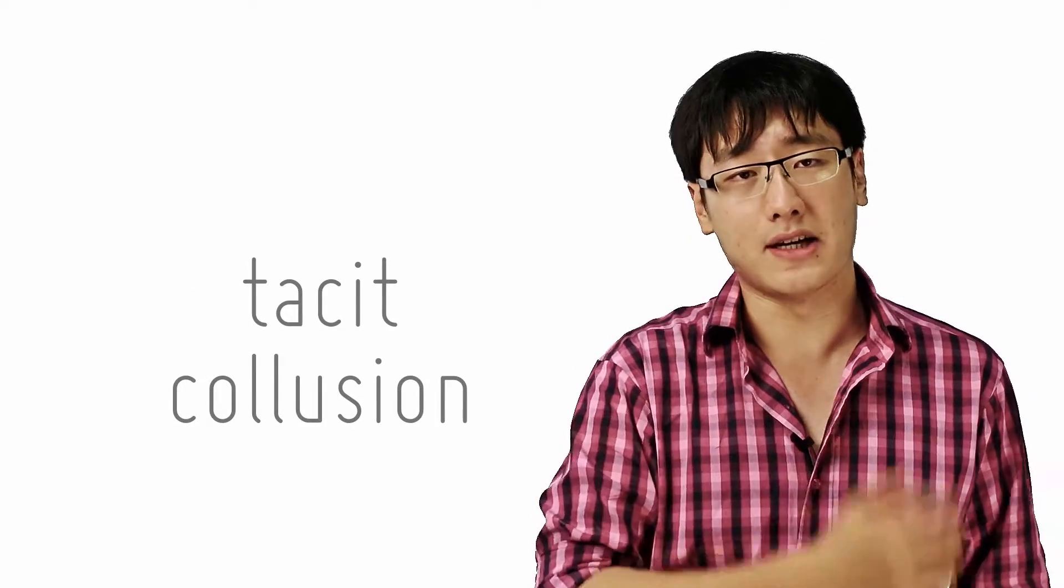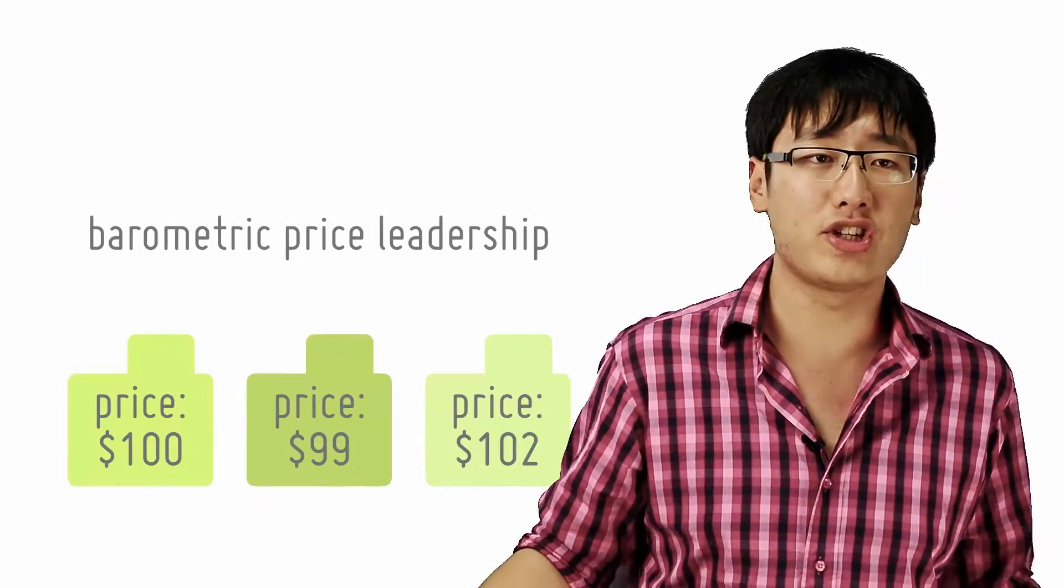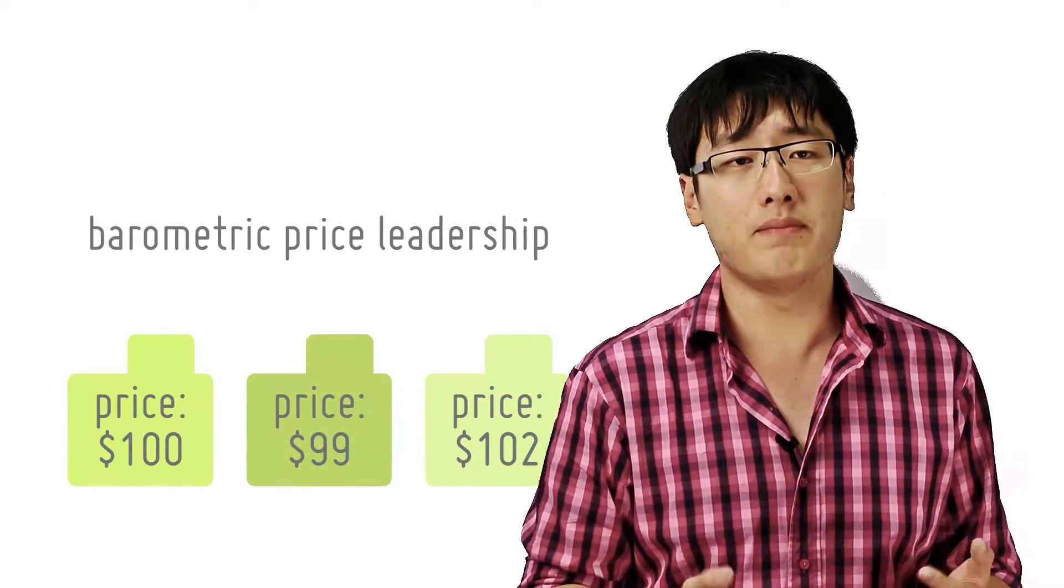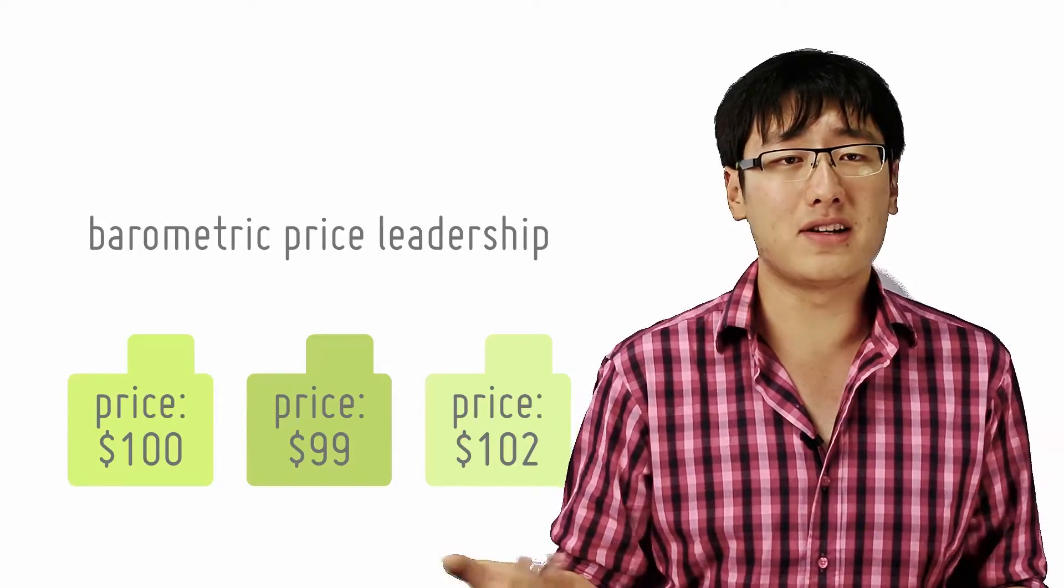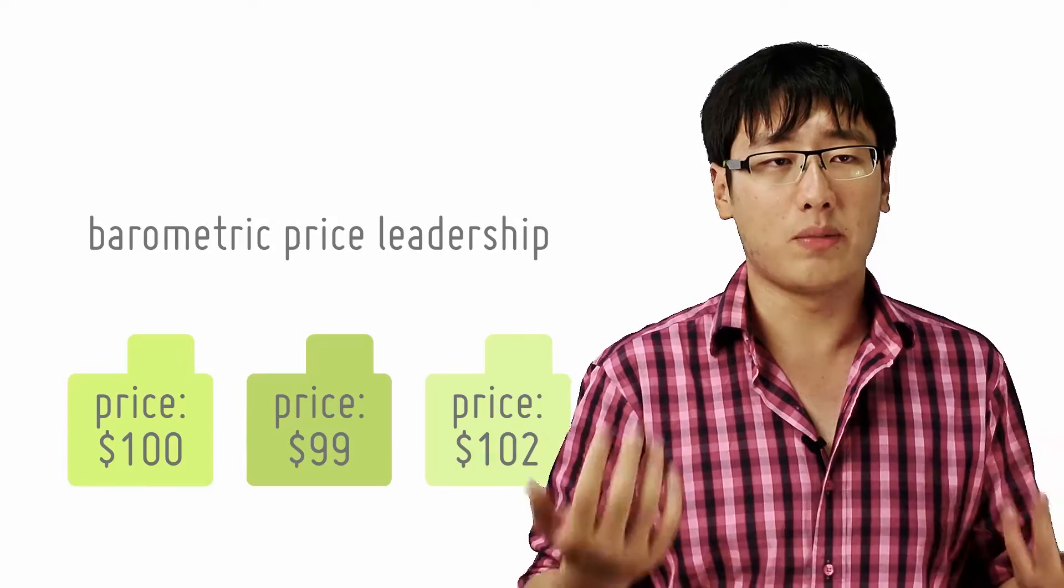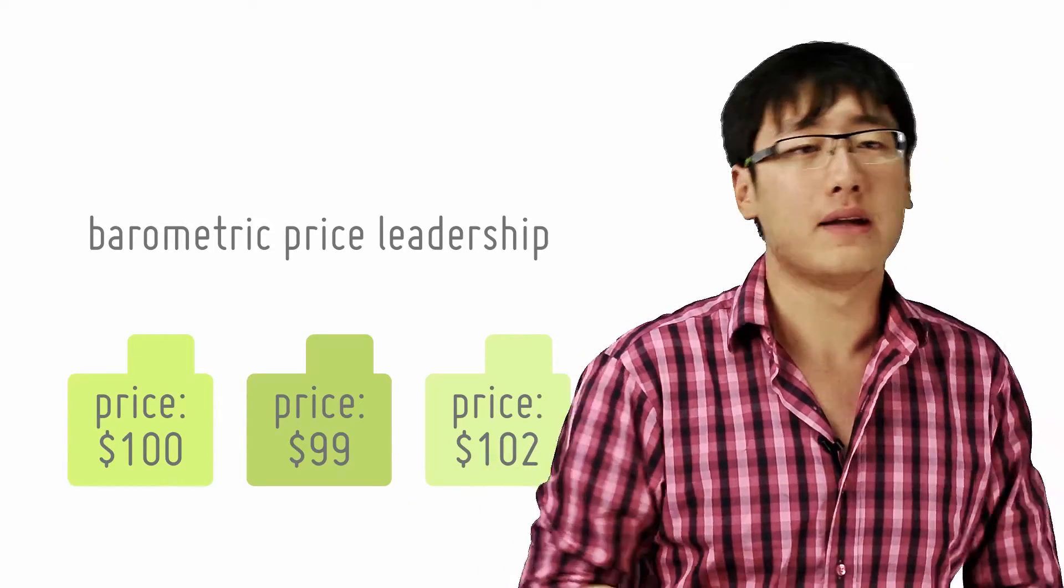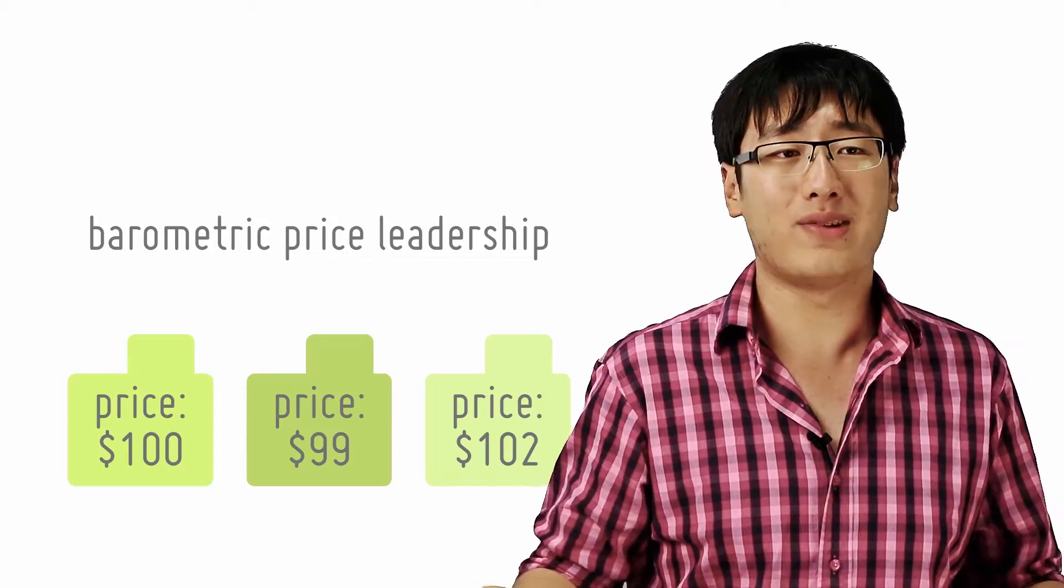One form of tacit collusion is where firms keep to the price set by an established leader. This is called dominant firm leadership. Or it may not be the dominant firm, but just the one that has proved to be the most reliable to follow. This is called barometric firm price leadership.